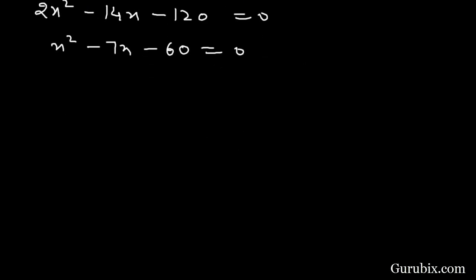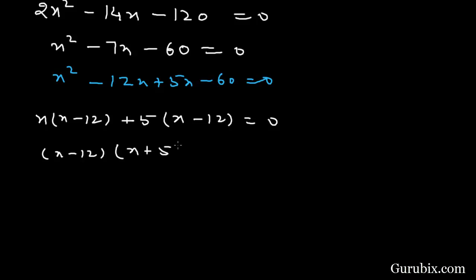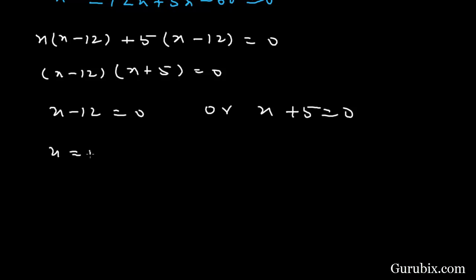We shall apply the method of middle-term splitting. This gives X squared minus 12X plus 5X minus 60 equals 0. Taking X common from the first two terms gives X(X minus 12). Taking (X minus 12) common from the last two terms gives 5(X minus 12). So we have (X minus 12)(X plus 5) equals 0. This means X minus 12 equals 0 or X plus 5 equals 0, giving X equals 12 or X equals minus 5.